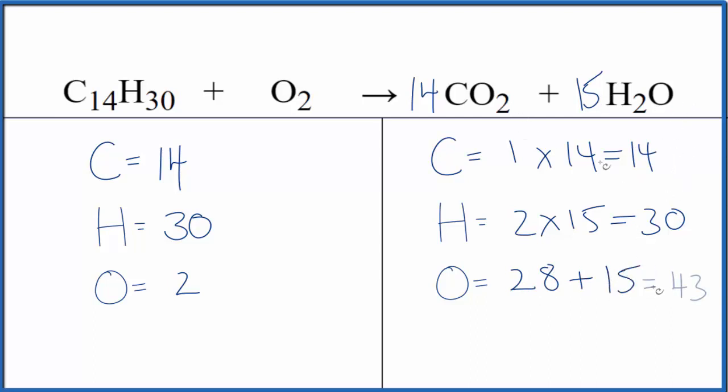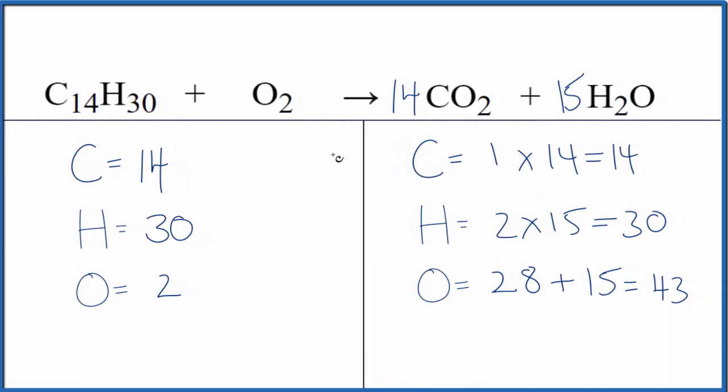That gives us... So now we have a bit of a problem. We have two oxygens here and then 43 on this side. The way to do this is to think 2 times some number, that equals 43. 2 times 43 over 2, that equals 43. This is our coefficient. And this equation is balanced. These are the correct coefficients.